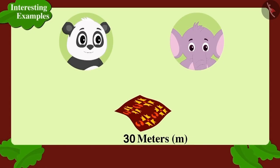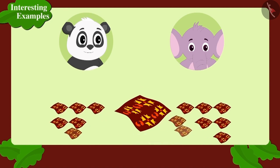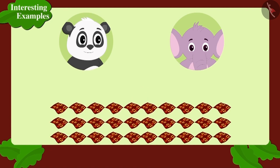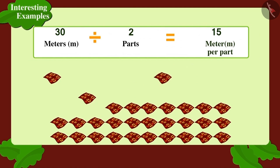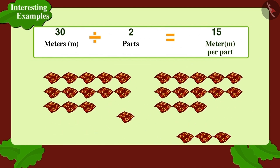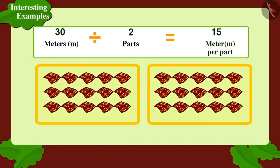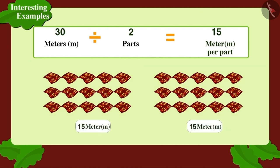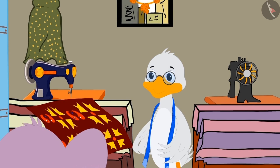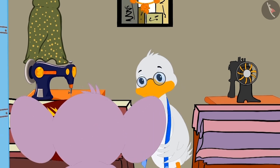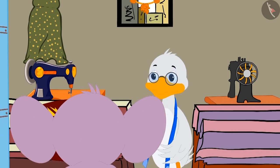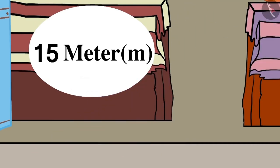Children, can you tell how Appu can find the answer to this question? Appu will have to divide the 30 meters of fabric into two equal parts. Suppose there are 30 pieces of fabric of one meter each. If we divide 30 into two equal parts, each part will have 15 meters. Appu went to Chacha's shop and got the fabric cut into two parts of 15 meters each.